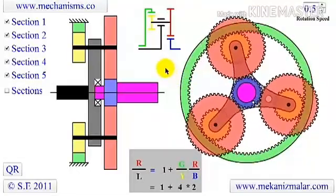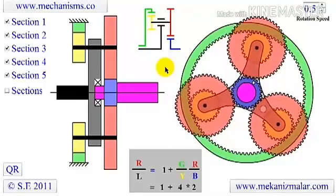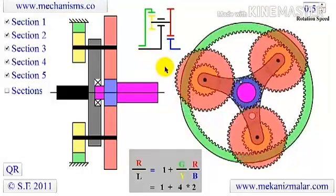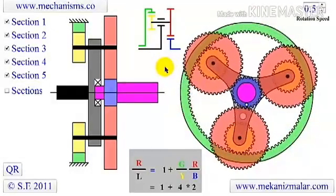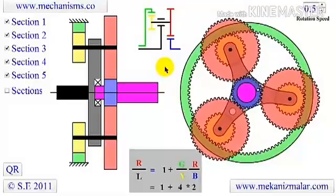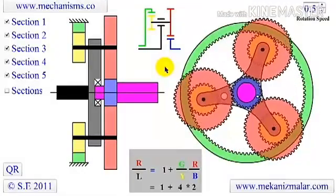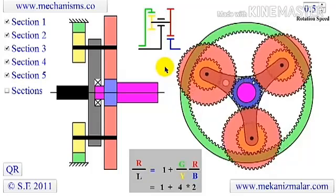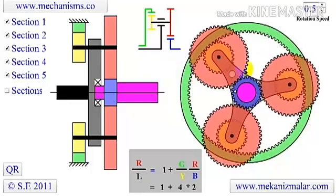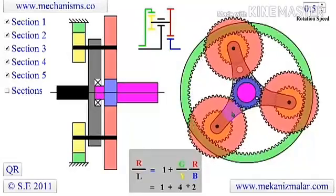The advantages of a planetary gear over parallel axis gear are compact size, higher efficiency, and low noise level. The planetary gearbox arrangement also creates greater stability due to the even distribution of mass and increased rotational stiffness.